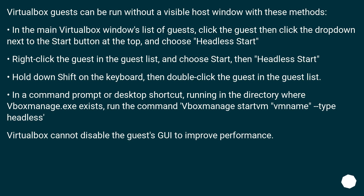VirtualBox guests can be run without a visible host window using these methods: In the main VirtualBox window's list of guests, click the guest then click the dropdown next to the Start button and choose Headless Start. Or right-click the guest in the guest list and choose Start, then Headless Start. Or hold down Shift on the keyboard and double-click the guest. Or in a command prompt, run VBoxManage startvm <name> --type headless.